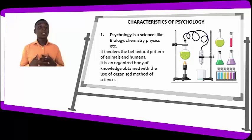Psychology is a science — like biology, like chemistry, like physics. It's not a social science, but it's a science. Psychology involves the behavioral patterns of humans and animals — how humans behave and how animals behave. Psychology is an organized body of knowledge obtained with the use of organized methods.